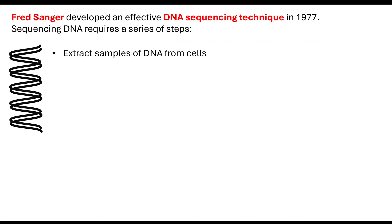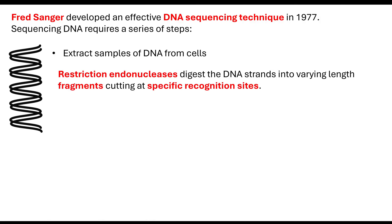Fred Sanger developed an effective way in which DNA sequencing can occur, and he did this in 1977. It takes a few steps to get to the point where we can say with certainty which DNA bases are within that sequence. The first thing you need to do is extract a sample of DNA from cells, and then they use restriction endonucleases — enzymes that digest the DNA strand into varying length fragments and cut at very specific recognition sites.